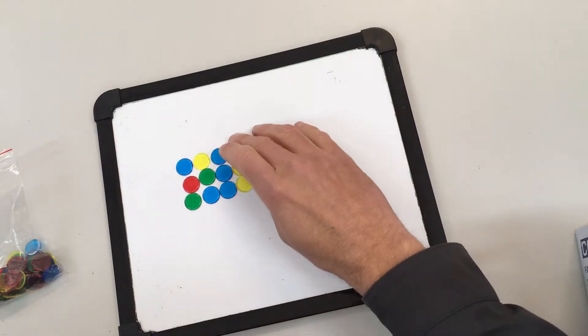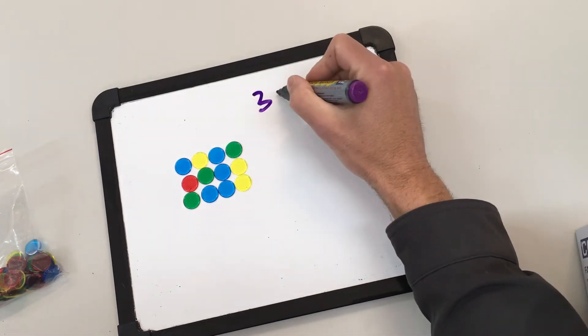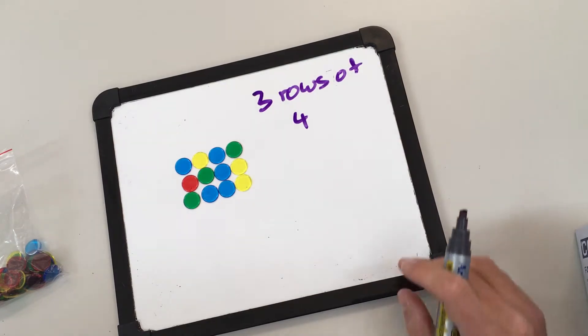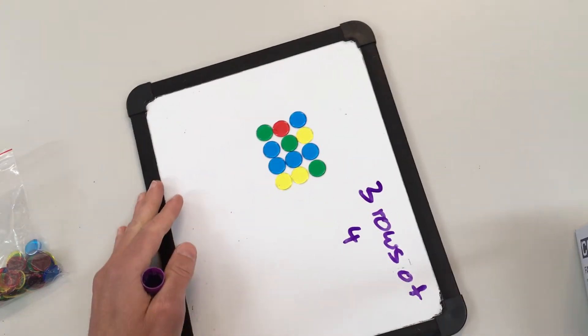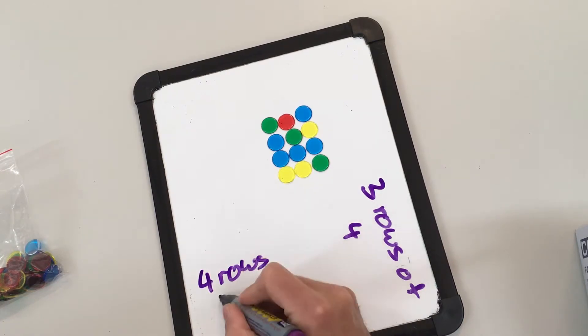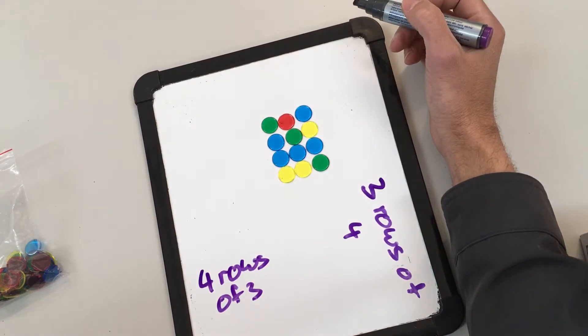So I've got my array which is three rows of four, but the beautiful thing about an array is that I can just rotate that, and now I've got four rows of three. So I'm seeing both examples of multiplication - I've got four times three and I have got three times four.